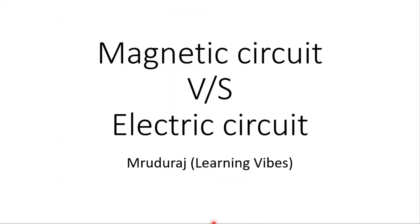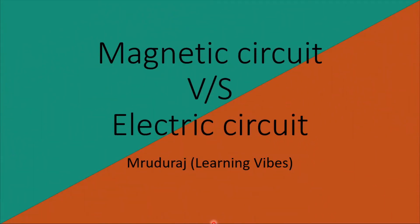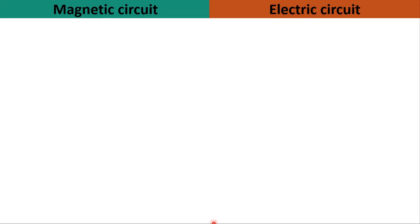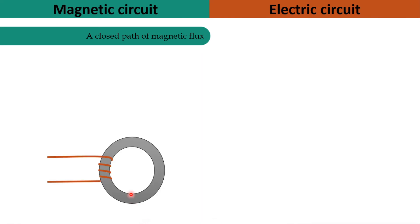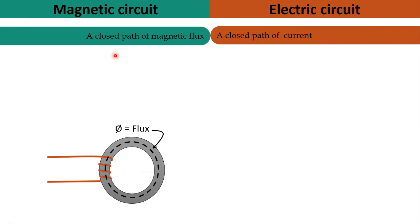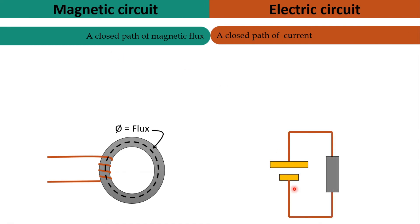Today we are going to discuss magnetic circuit versus electric circuit. A closed path of magnetic flux is known as a magnetic circuit. Here we have a solenoid and flux established in this solenoid, so the closed path of this flux is known as magnetic circuit. Similarly, in an electrical circuit, a closed path of current is known as an electrical circuit — a battery connected to a resistance through which current flows.